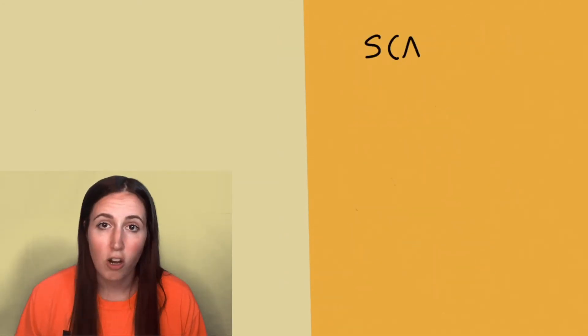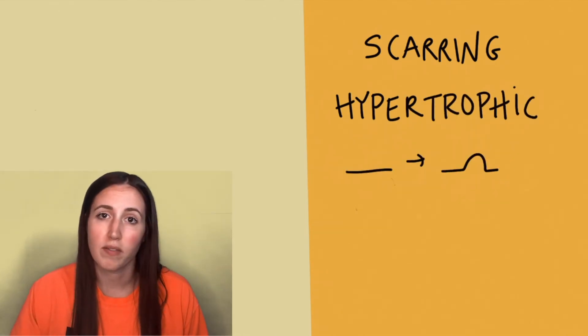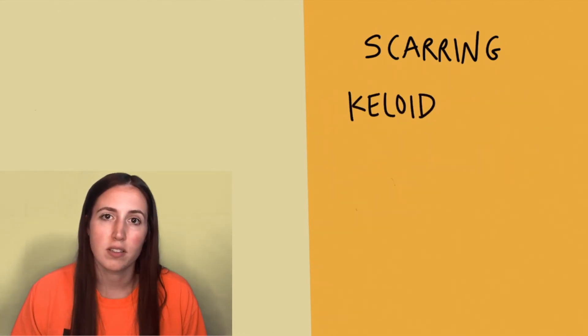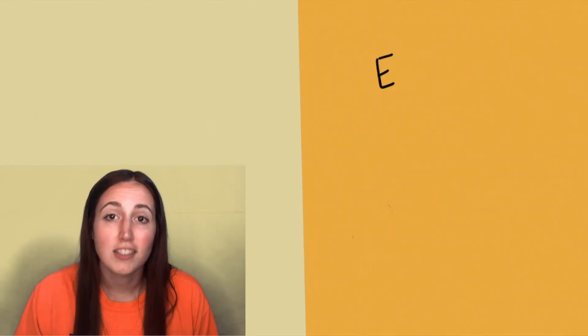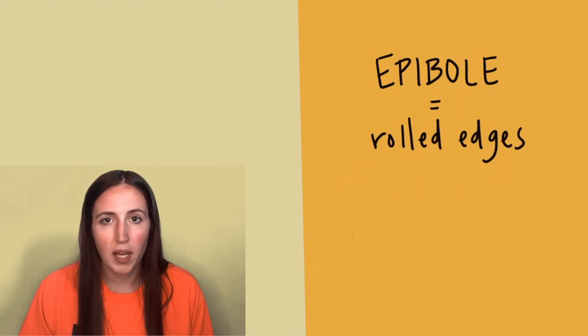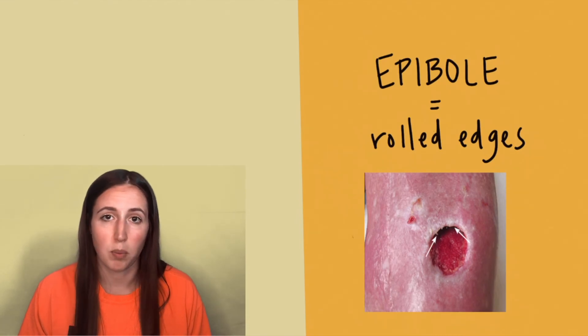Note what kind of scarring is occurring — is it normal? Is it hypertrophic scarring, which is raised above the skin? Is it a keloid scar that's overextending the borders of the original wound? And is there any epiboli? Epiboli is when the edges of the wound bed start to roll under, which can prevent the wound from closing and healing properly. Being comfortable with wound assessment is important for determining how the wound originated, how to treat it, and what types of dressings to use.